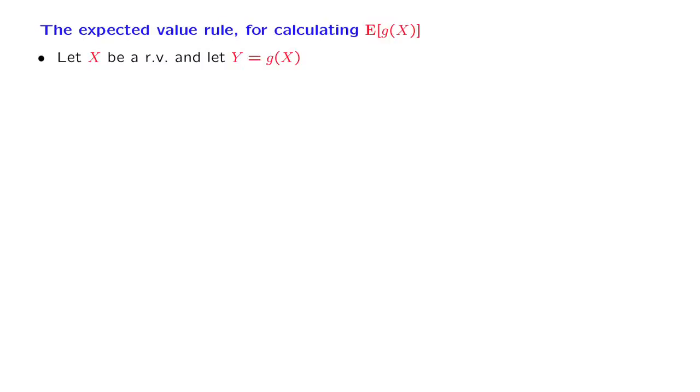In this segment, we discuss the expected value rule for calculating the expected value of a function of a random variable. It corresponds to a nice formula that we will see shortly, but it also involves a much more general idea that we will encounter many times in this course in somewhat different forms.